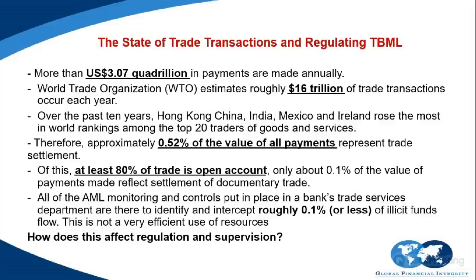I'm the Policy Director at Global Financial Integrity, a Washington D.C.-based think tank that specializes in advocacy, advisory and research services related to illicit financial flows. The main thrust of our work looks at how trade can act as both an enabler and facilitator of illicit finance and what mitigating measures can be undertaken. For this webinar, I will be focusing on trade-based money laundering. Before we sink into the subject, it's important to frame this discussion with some big picture numbers. Global data on payments shows that annually $3.07 quadrillion dollars move through the financial system, while the World Trade Organization shows that $16 trillion dollars account for trade transactions.